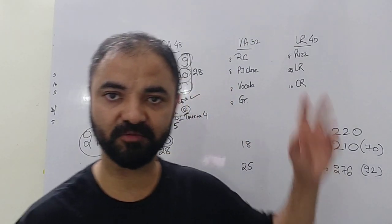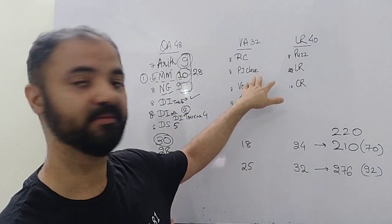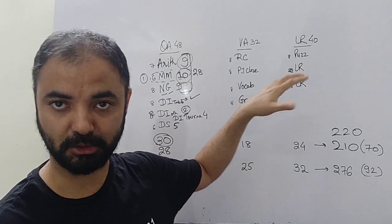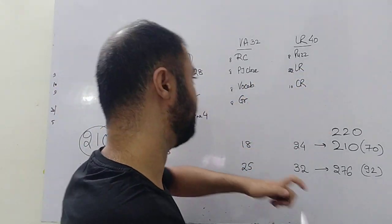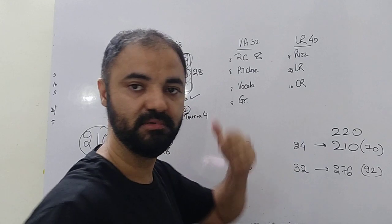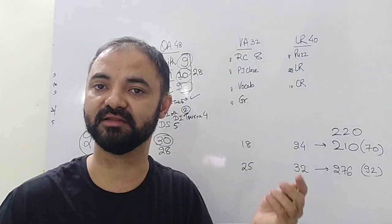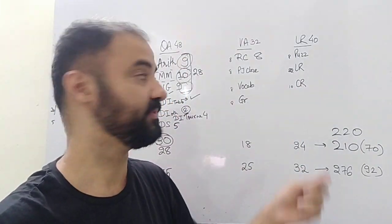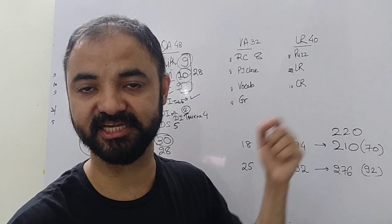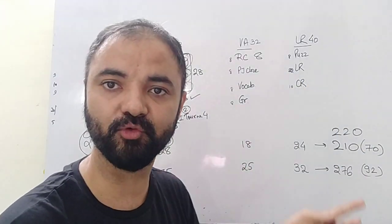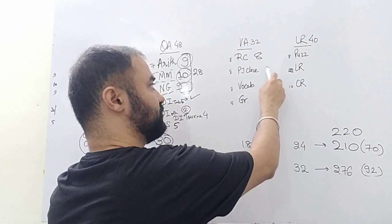Moving to the verbal section, there are 4 parts in verbal: RC, parajumbal, passage, vocabulary. RC remains same, 8 questions. And typically like last year, one set was easy, one set was difficult. Parajumbal and cloze passage, 8 questions - 4 on parajumbal and 4 on the cloze test.